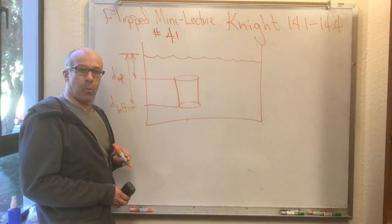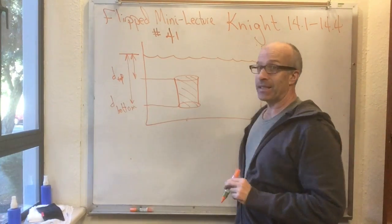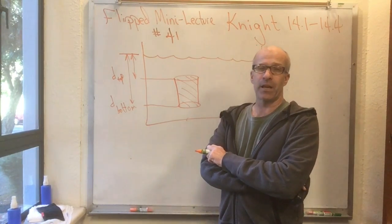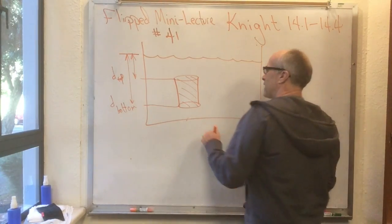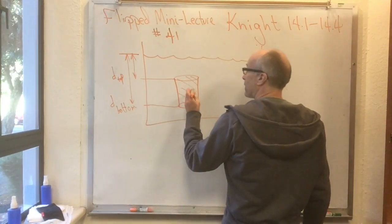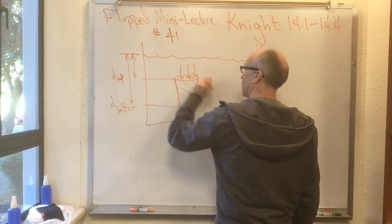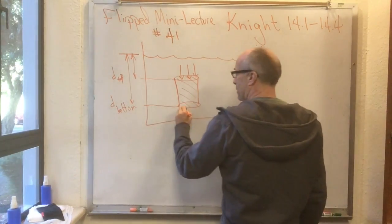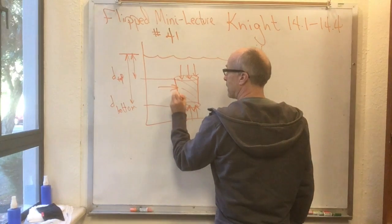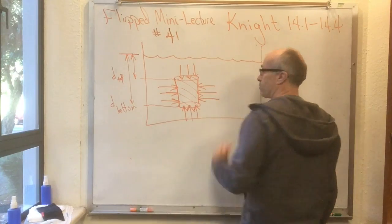Water has pressure in it everywhere. This is like a tin can except it's full of water — it's an imaginary tin can that you're imagining in the pool. On the top side of the tin can, the pool water is pushing down on the top. On the bottom side, the pool water is pushing up, and on each side the pool water is pushing inward from that direction.